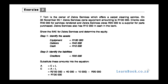Exercise 2. Tom is the owner of Zebra Services, which offers a carpet cleaning service. On the 30th of November 2001, Zebra Services owns equipment amounting to $100,000. Clients owe $40,000 for services rendered and Zebra Services owes $20,000 to the supplier for parts purchased. Zebra Services also has $10,000 cash in the bank. Show the BAE for Zebra Services and determine equity.